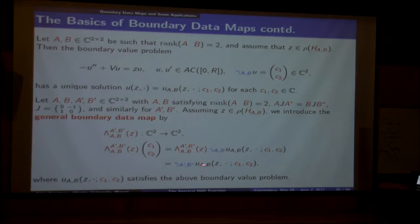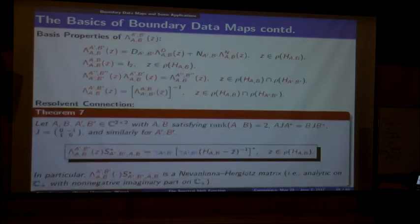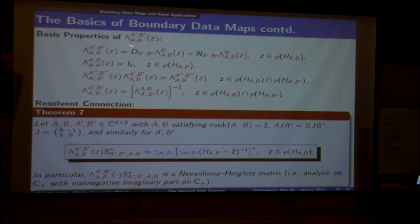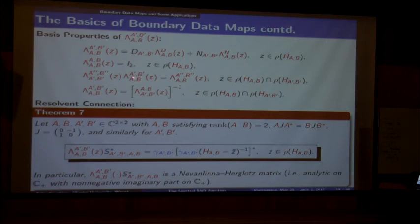Here are a few formulas for these maps. The general boundary data map satisfies nice properties. If you go from AB to AB, nothing changes—you get the identity. There's a nice transitivity property: if you want to go from AB to A double prime B double prime, you can do it in steps—from AB to A'B' and then to A''B''. And of course, interchanging AB and A'B' gives the inverse. It's a very nice transitivity property.